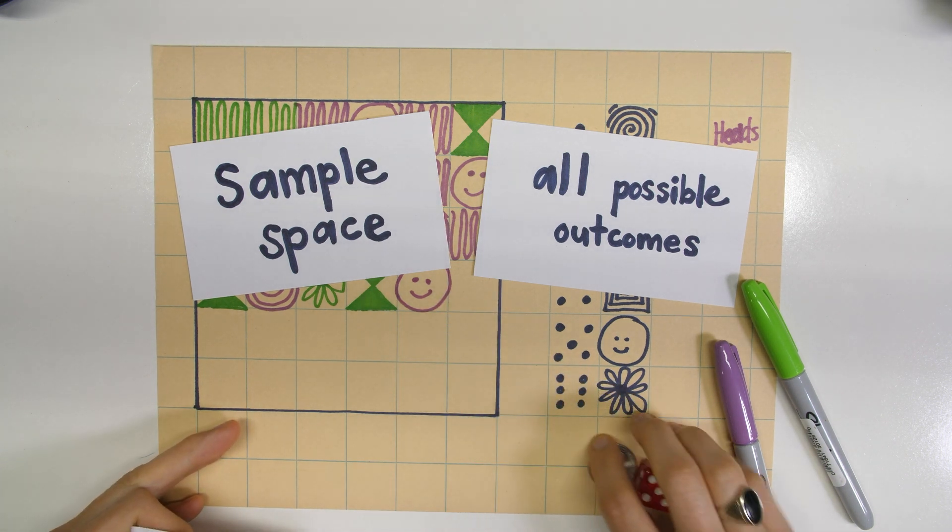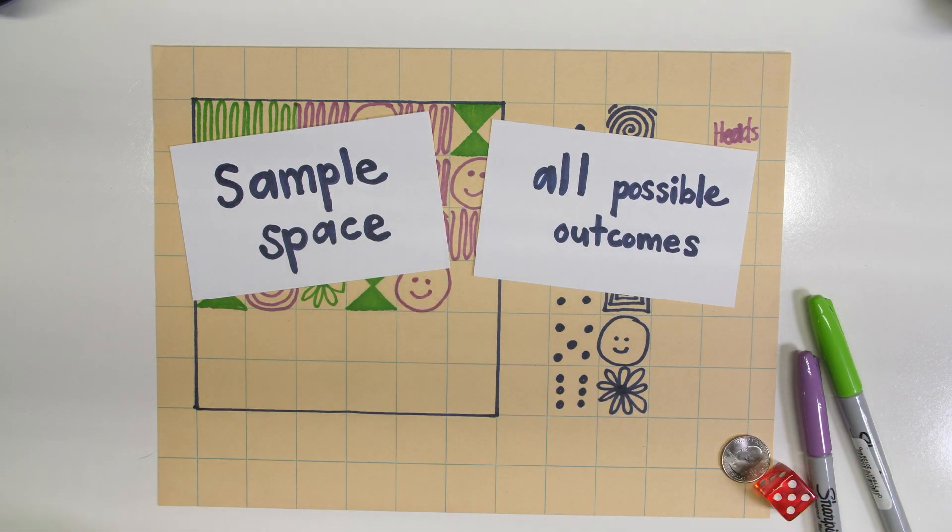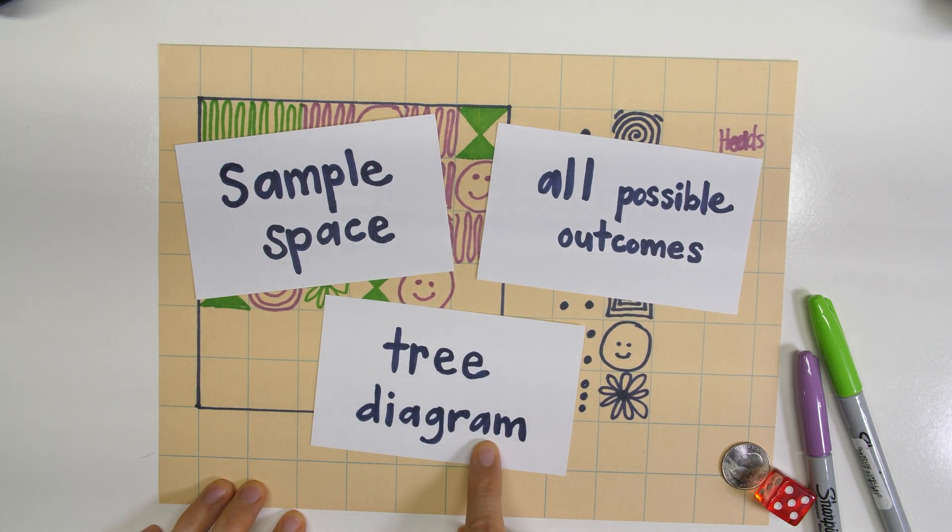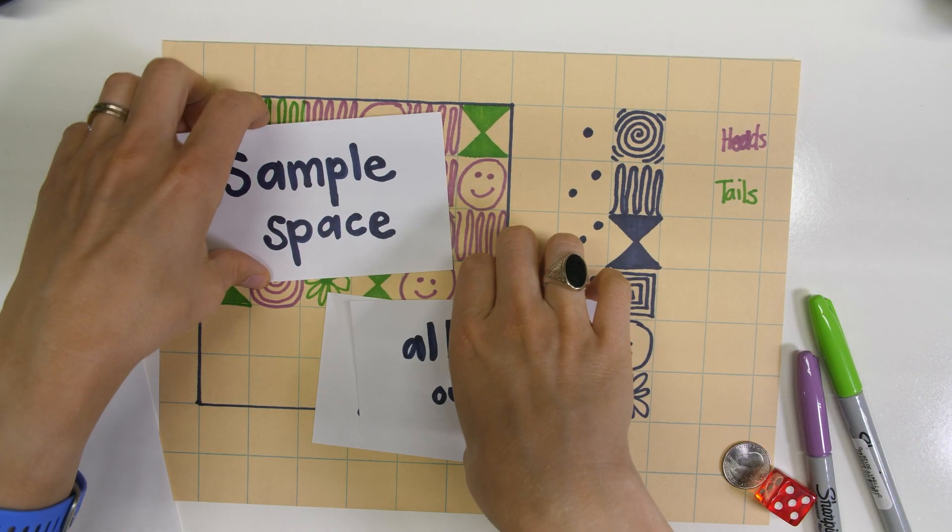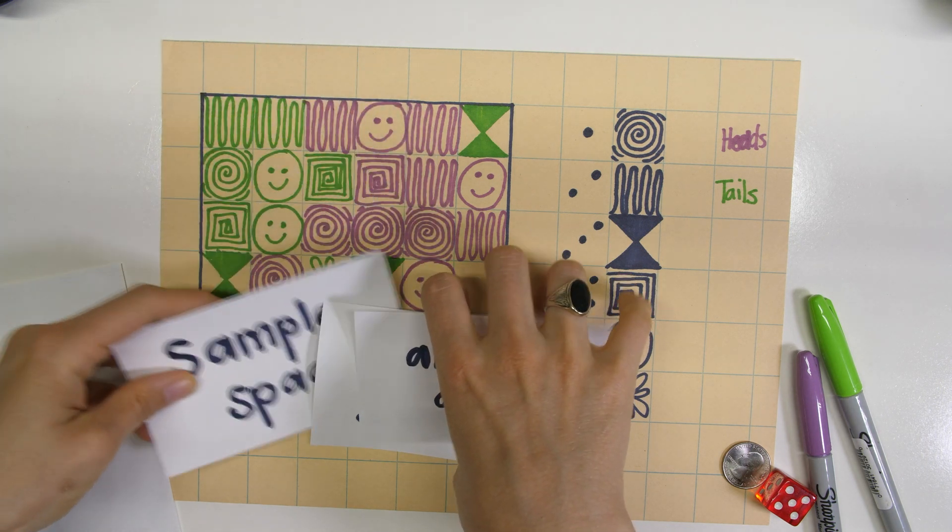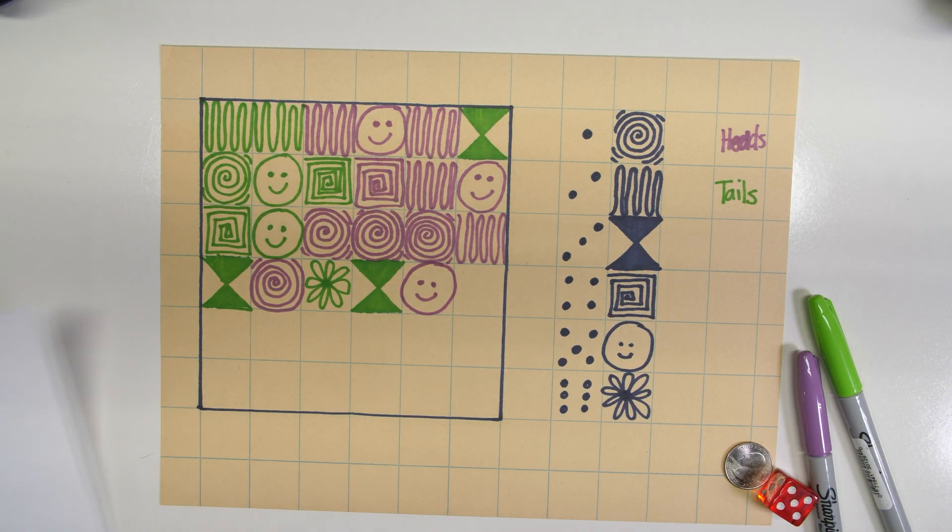if I wanted to think about all of them and be able to list the sample space, it might help to build a tree diagram so I could count them and see all of those possible outcomes in my sample space. So let's see if we can draw the tree diagram that matches this probability task that we're working on.